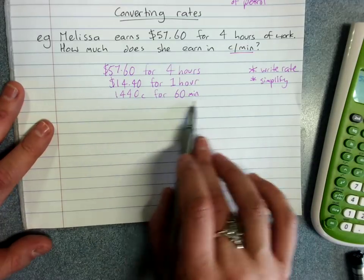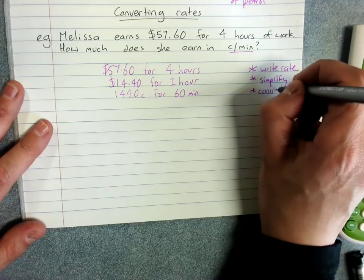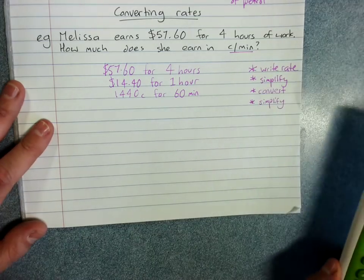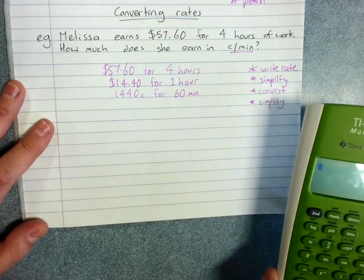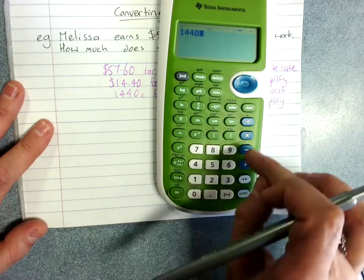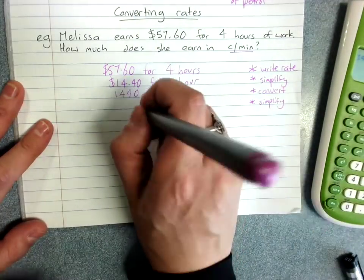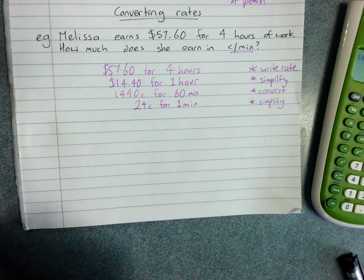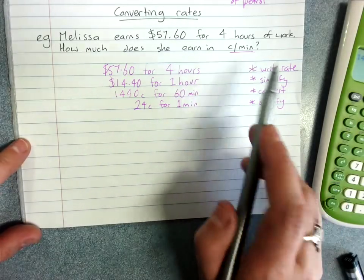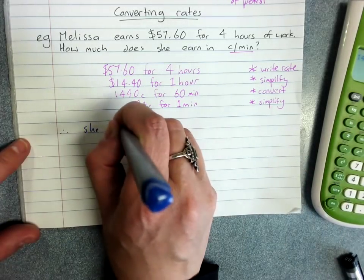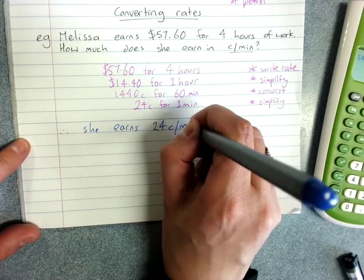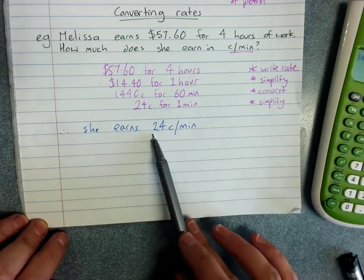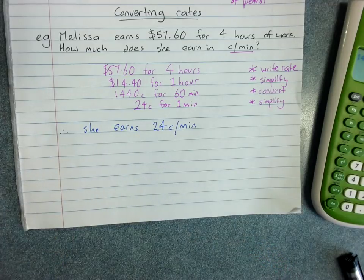And now that's another rate that we have to simplify. And so I'll be dividing by 60 on each side to get down to one minute. And then once you've got to the end and you're giving your answer as a rate because they did want cents per minute. Therefore she earns 24 cents per minute. So $14.40 an hour actually equates to 24 cents per minute.